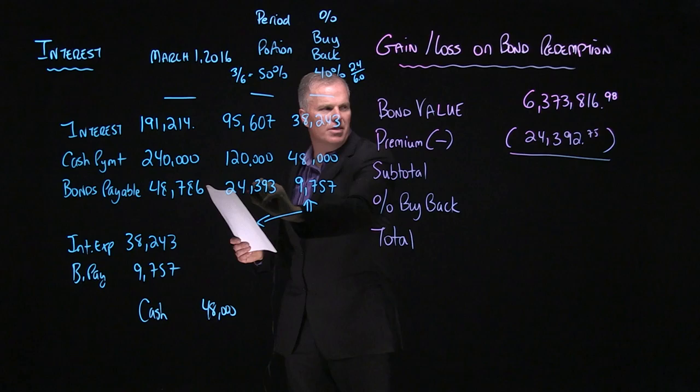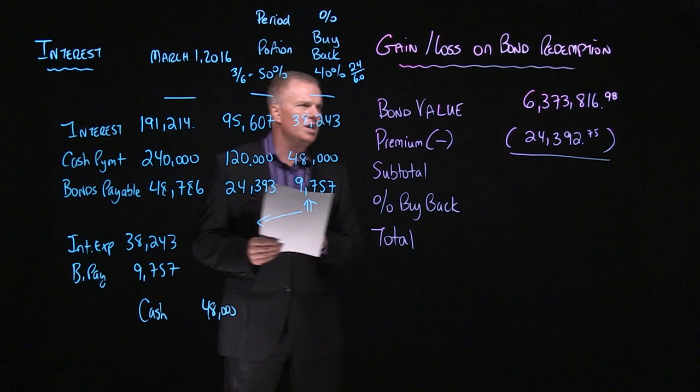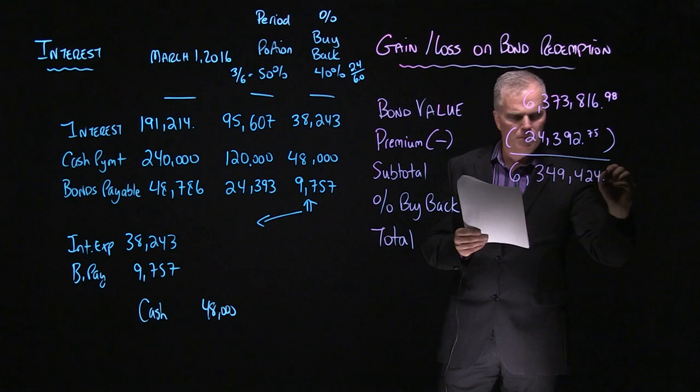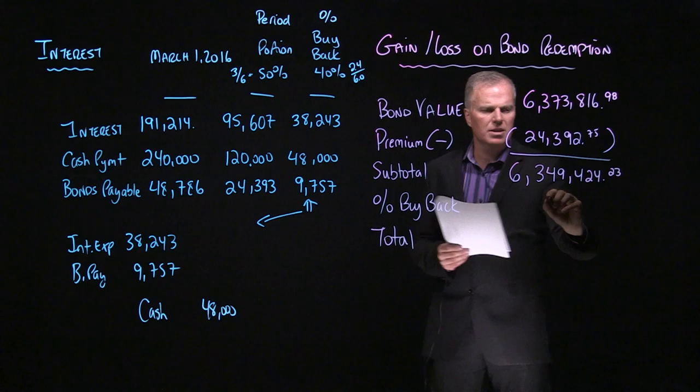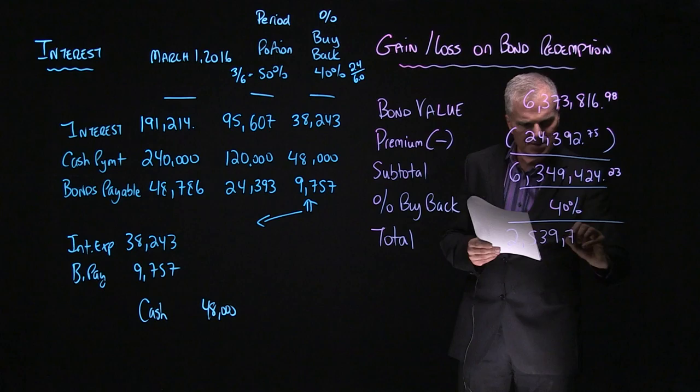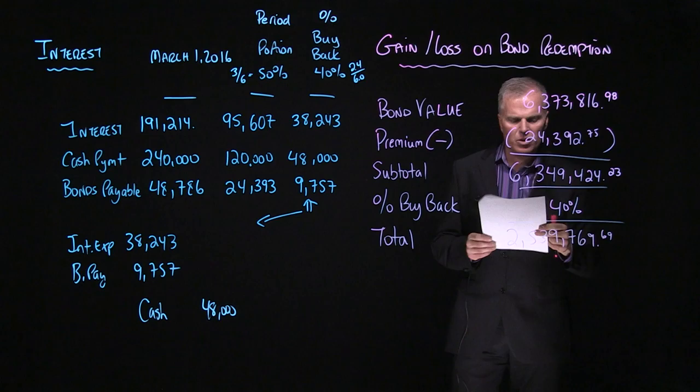Again, in this one, I'll show you the pennies. Now, where did this number come from? Right here. There's that number. It's basically my bonds payable amount times 50%. That's where I got that number. So my subtotal will be $6,349,424.23. Now, my percentage buyback, we've already calculated, is 40%. And then now my total will come out to $2,539,769.69.